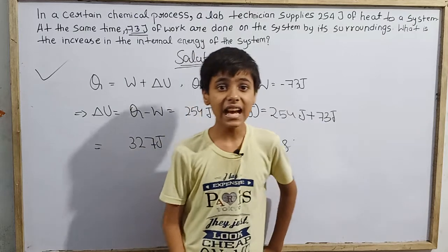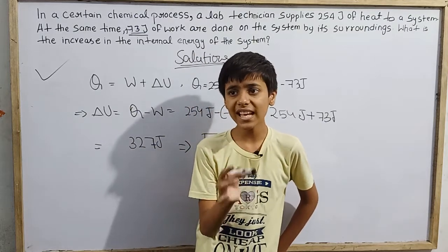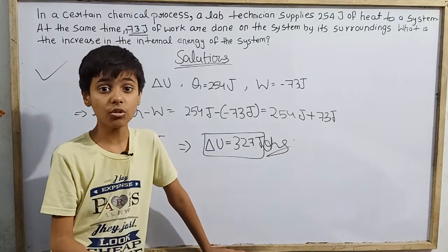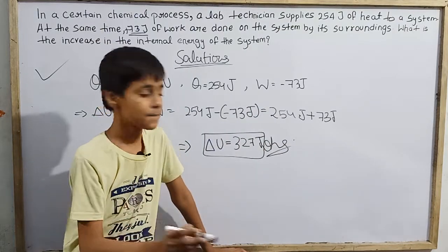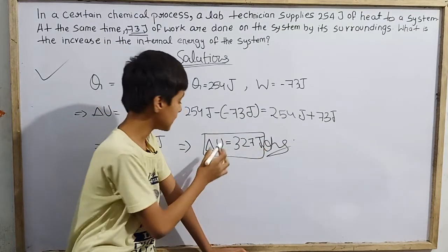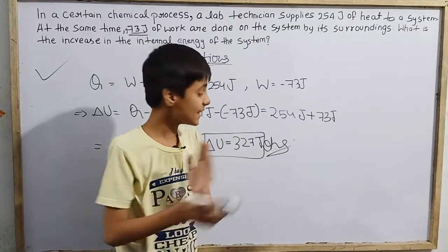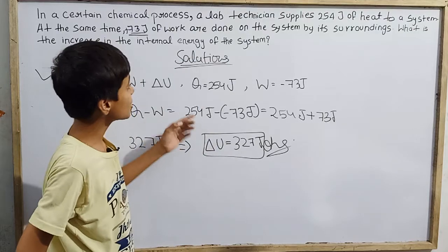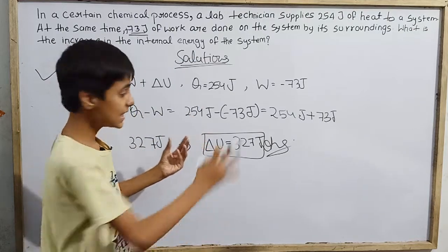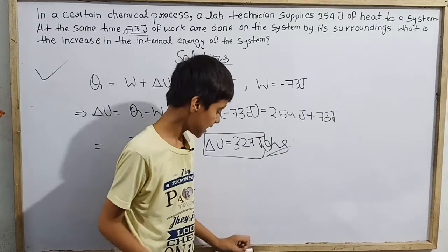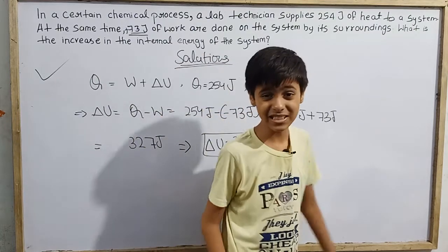But one thing again I would like to mention: you have initial internal energy and final internal energy. The difference is final minus initial, delta U, which is how much change has been. If initially there was so much energy and finally so much, that difference is given as 327 joules.